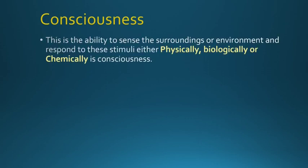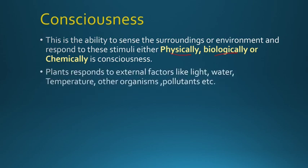Consciousness is the ability to sense the surrounding physically, biologically, or chemically. Physically, if somebody is touching you, you come to know. Biologically, certain chemicals or hormones trigger responses — for example, ants travel in a straight line because they secrete pheromones. So if we are responding to physical, biological, or chemical stimuli, it is consciousness.